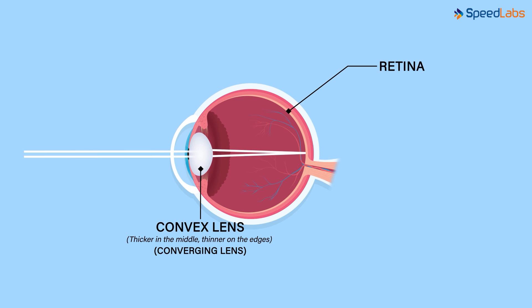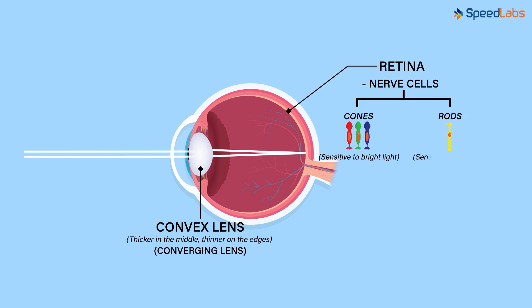Retina is at the back of the eye and marks the inner layer of the eyeball. Retina contains lots of nerve cells that sense the light. The nerve cells are of two kinds: cones, which are sensitive to bright light, and rods, which are sensitive to dim light. The message or sensation is then transferred to the brain along the optic nerve.